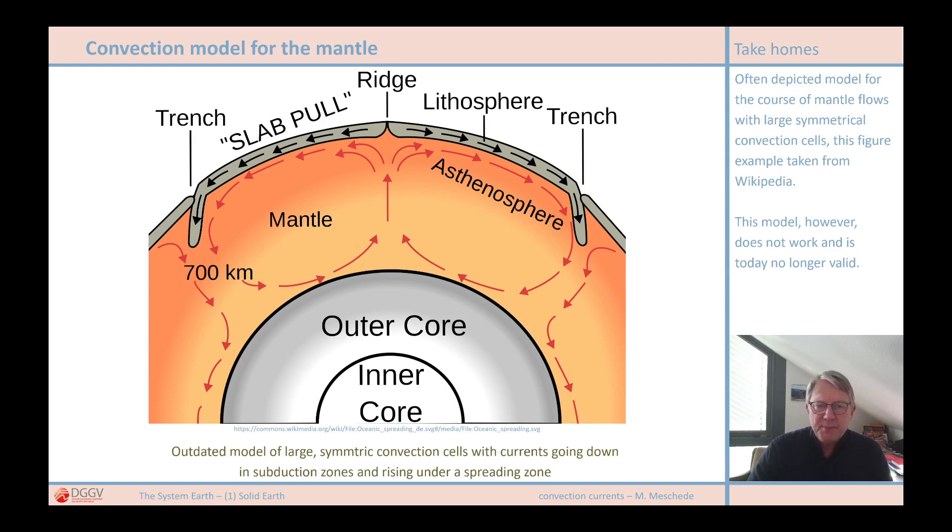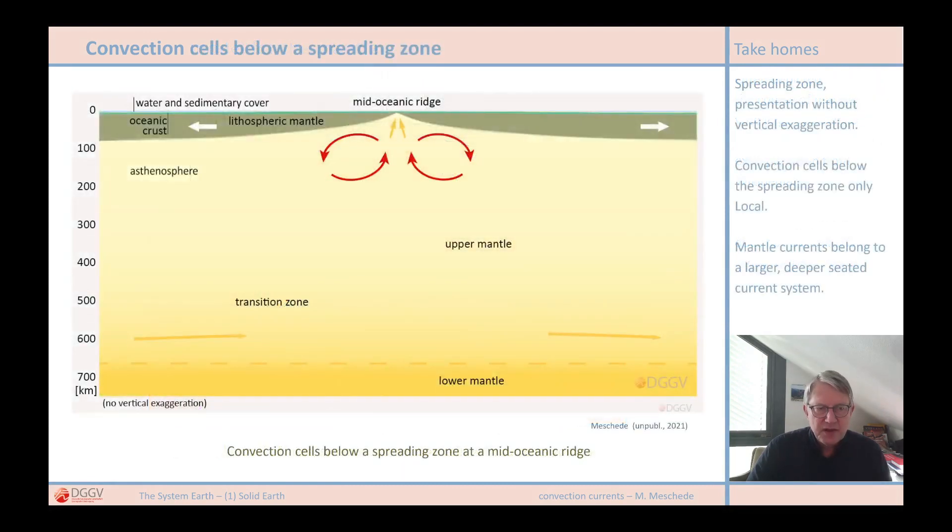What would then happen to the convection cells when the ocean disappears? Or let's look at the Atlantic, which doesn't fit into this model at all because there are no subduction zones at the edges, apart from very small ones in the Caribbean and South Georgia. Neither on the American, European or African side we can find subduction zones. But in the middle between the two plates is a spreading zone that has been active for millions of years. So, in short, that's not how it works.